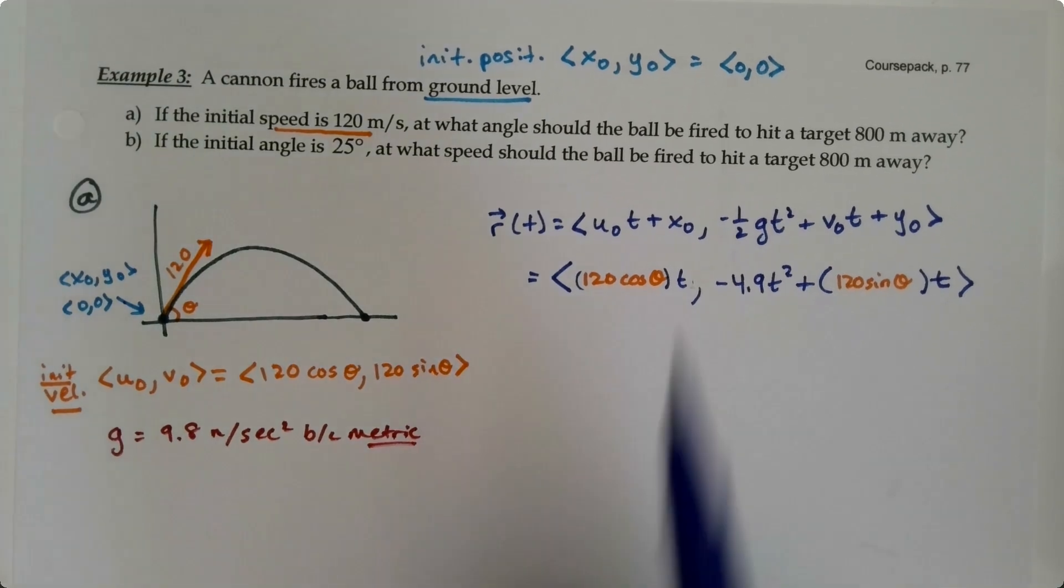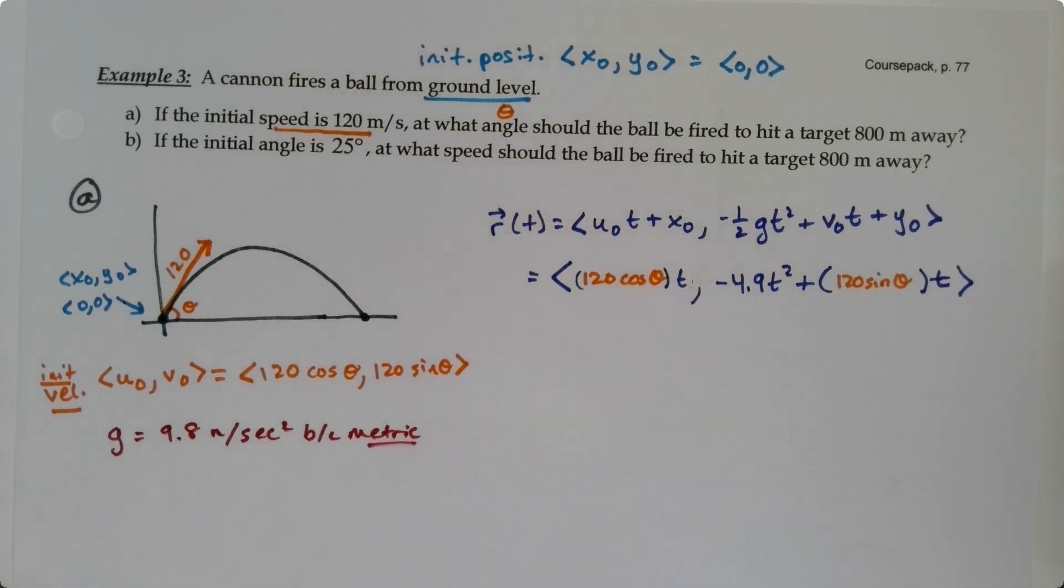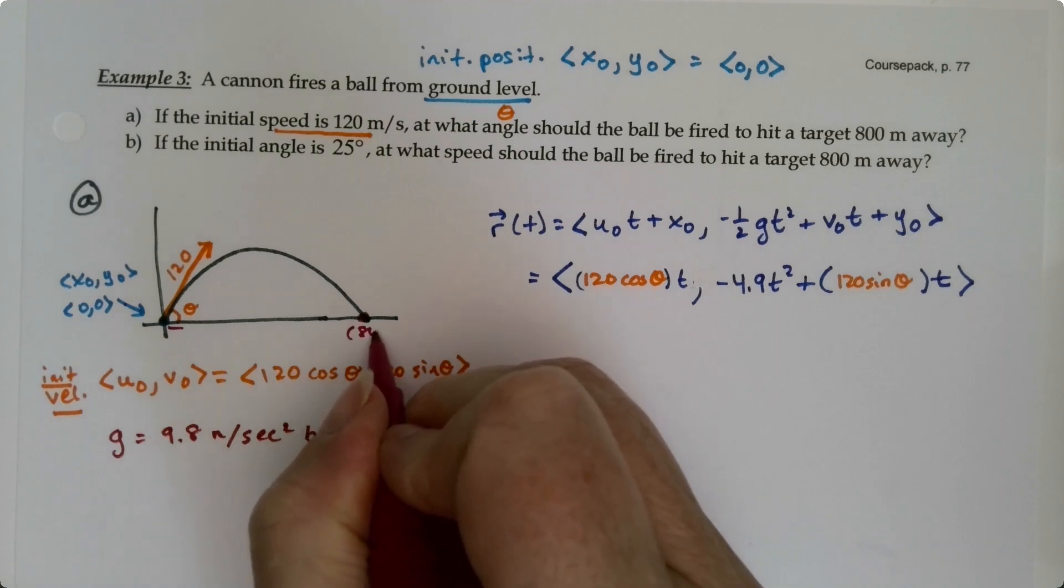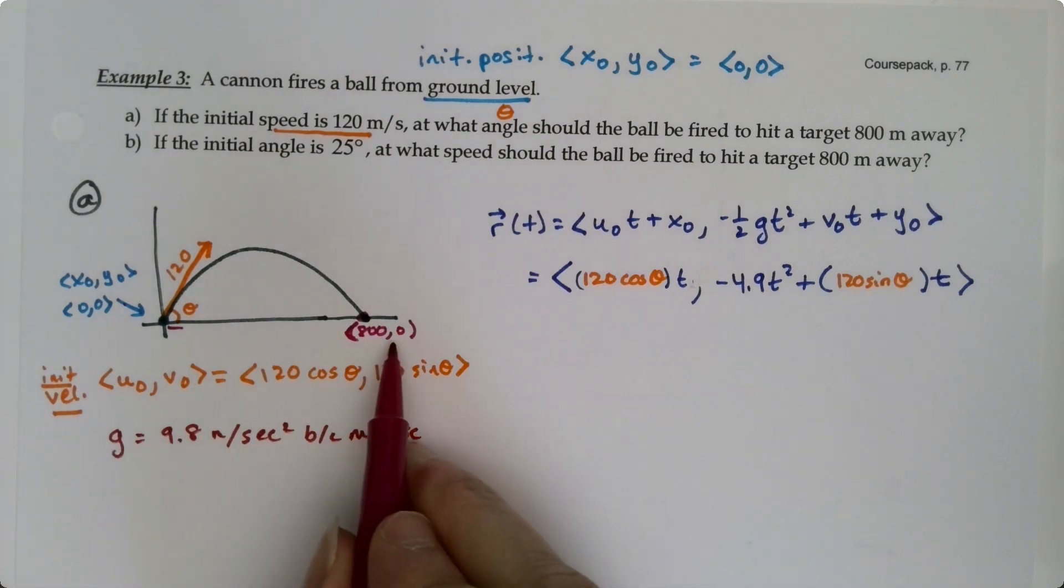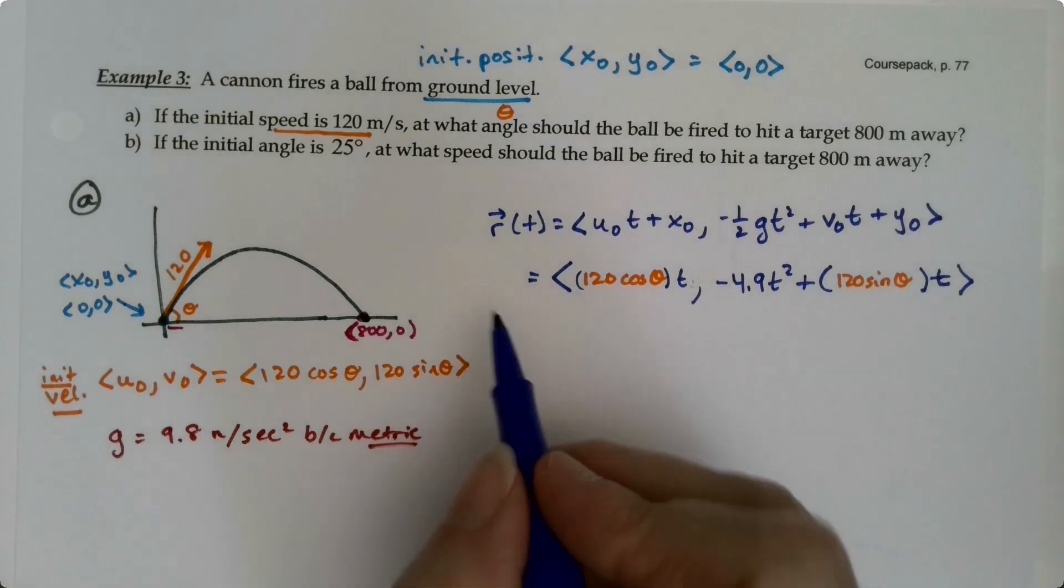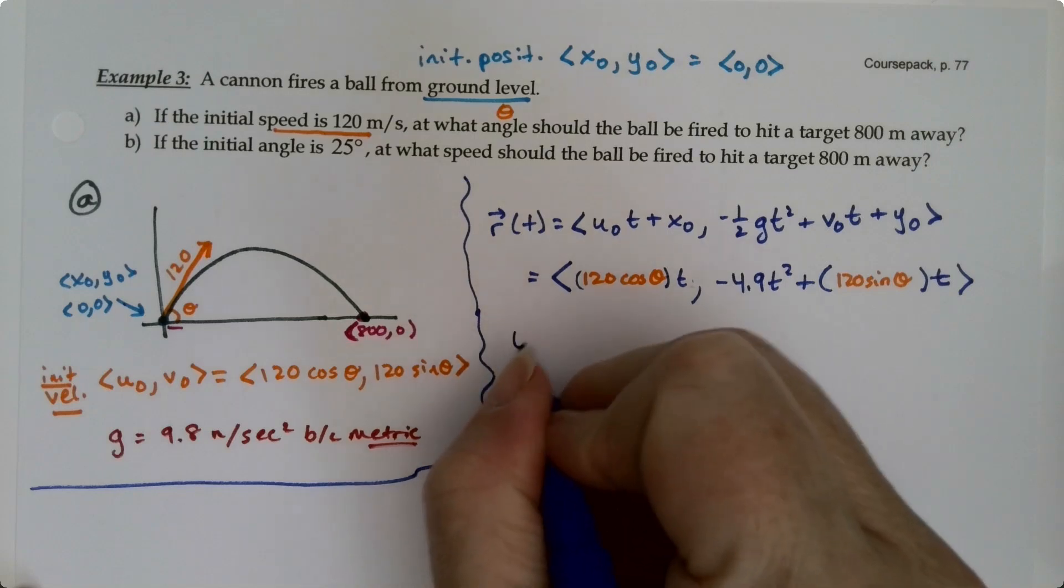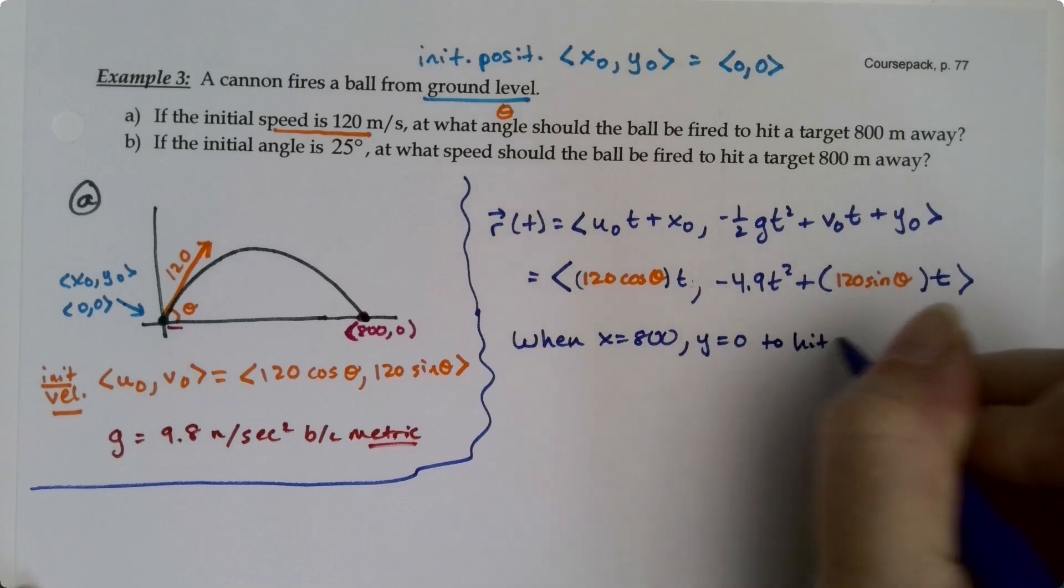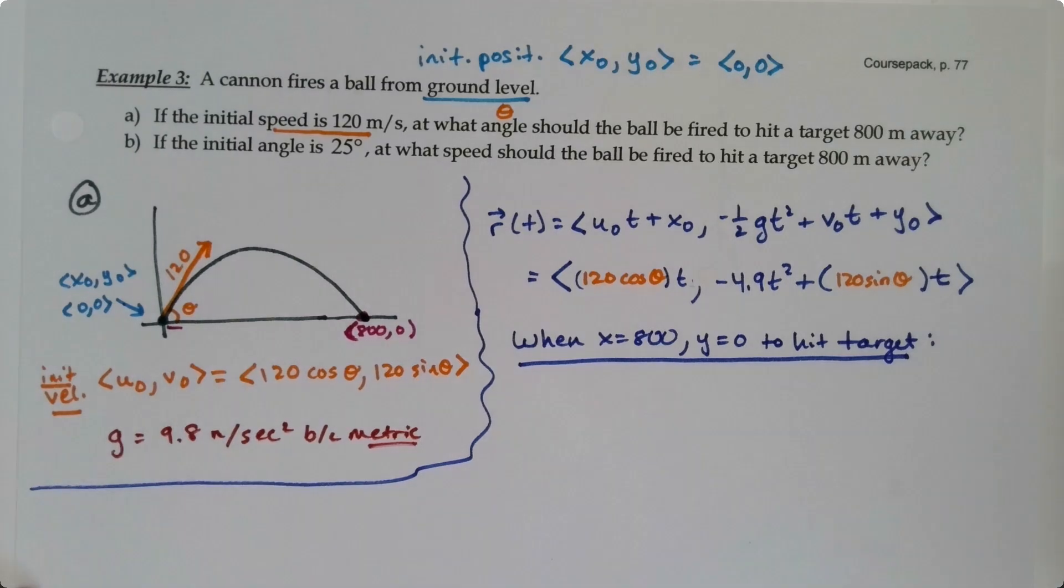Now there is one more piece of information. So if you'll notice, we're looking for the angle. So we're looking for theta. That's what we want to find. So I'm not going to be able to just plug in values here. But I do know that the target is 800 meters away. So I know that this distance right here is 800. And so this point over here is 800 comma 0, if I want to write it as a point or a vector. I just want to kind of segment off my graph. So let's make a note. When x is 800, y is 0 to hit the target. Or at the target. So at the target, x is 800, y is 0. That's over here.